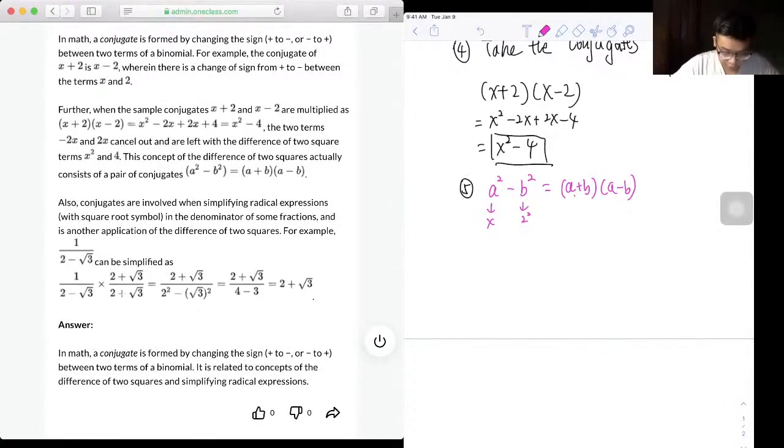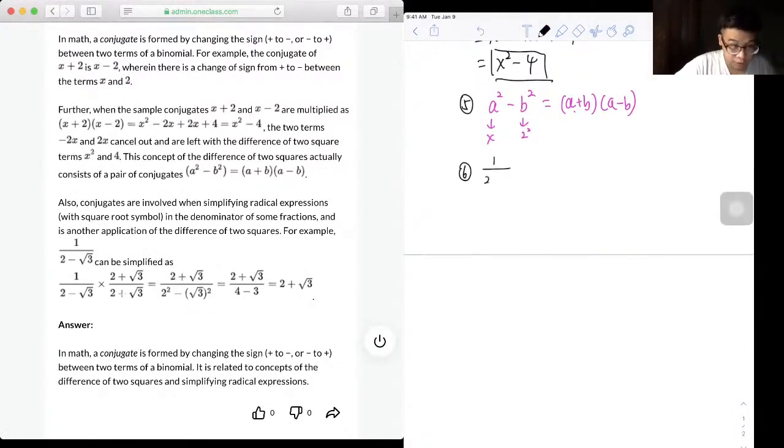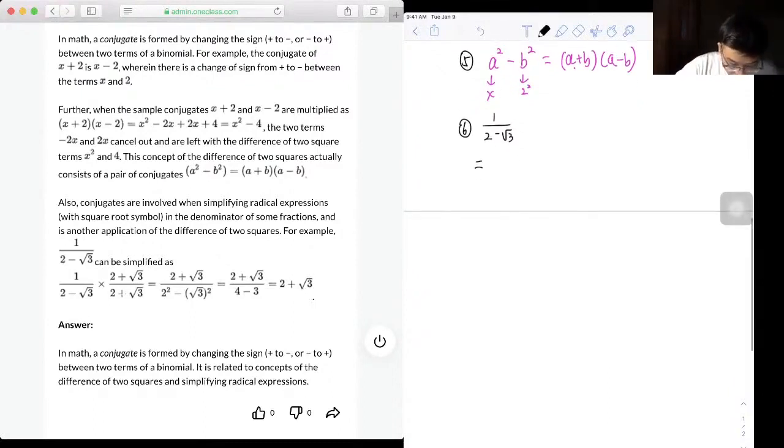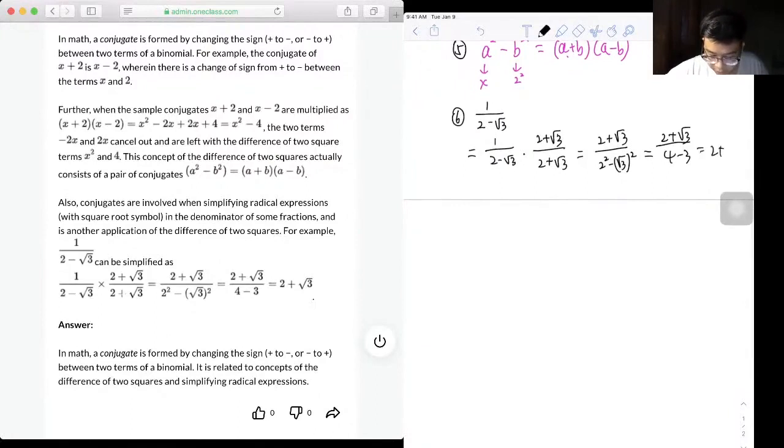So let's just do another example. So if we're having a question like 1 over 2 minus root 3, and in this case, if we want to rationalize this fraction, we will need to multiply the conjugate of 2 minus root 3, which will be 2 plus root 3. But since we need to maintain the same value of the fraction, so we need to do the same thing for the numerator. And this will give us 2 plus root 3 over 2 squared minus root 3 squared, which will be 2 plus root 3 over 4 minus 3, and which will give us 2 plus root 3 as our final answer.